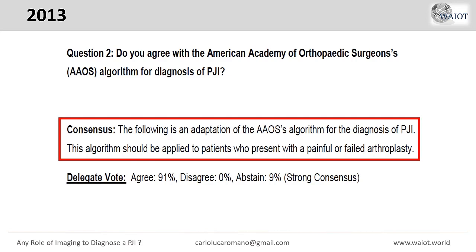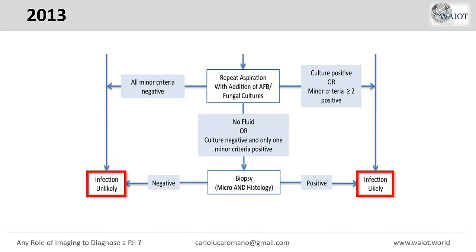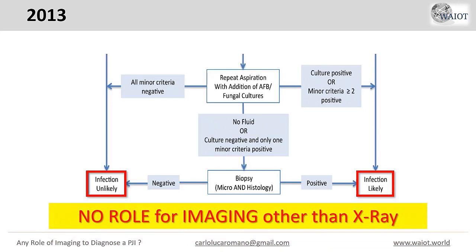In question number two, the delegates were asked to vote for the American Academy of Orthopedic Surgeons algorithm to diagnose a PJI. This algorithm only includes X-ray as an imaging diagnostic procedure to diagnose a periprosthetic joint infection. The output of the algorithm is infection likely or infection unlikely, but no role for imaging beyond X-ray.